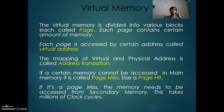Virtual memory is divided into various blocks; each block is called a page, and each page contains a certain amount of memory. These pages are accessed by the PC using virtual addresses. The mapping of a virtual address present in the PC to a physical address present in the main memory is called a page hit; otherwise it is called a page miss. If it is a page miss, the data needs to be fetched from secondary memory, which takes millions of clock cycles.